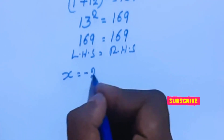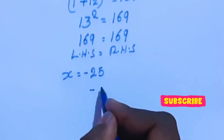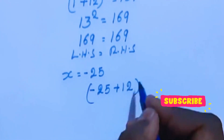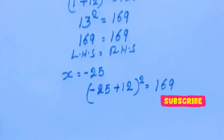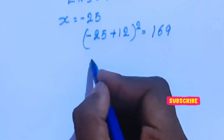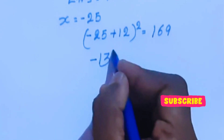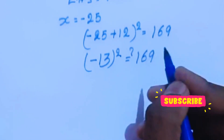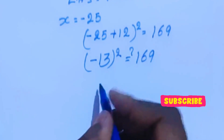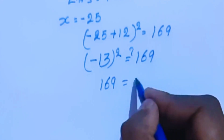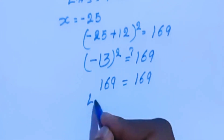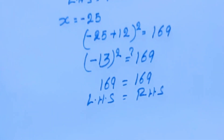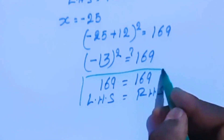Now substituting x equal to minus 25: minus 25 plus 12 whole square equal to 169. This gives minus 13 square equal to 169, which is 169 equal to 169. So LHS equals RHS. We have verified both x values.